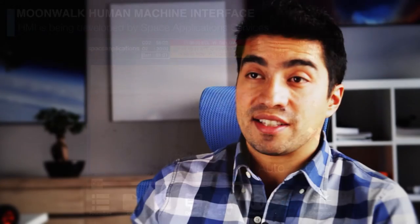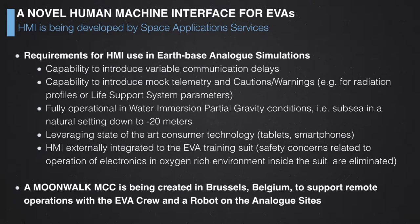There is also a very accessible emergency button available at any time for conveying critical information to colleagues. For the MoonWalk project, our system requirements include the capability to introduce variable communication delays, since we want to train astronauts for missions on the Moon, Mars, or an asteroid — each with different delay profiles. We also need the capability to introduce mock telemetry and cautions and warnings to train astronauts to react to them.